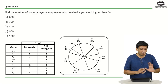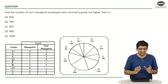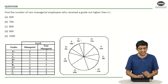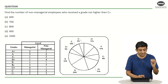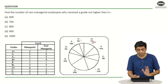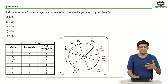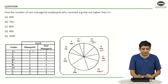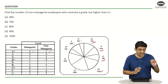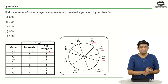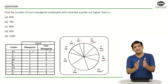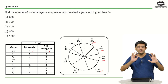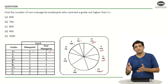In the first question, you have to find the number of non-managerial employees who received a grade not higher than C+. In this context, out of the 10,000 employees in this organization, A+ comprises 12% of the entire employee population, A is 10%, A minus is 8%, B+ is 15%, and so on. Of those who received A+, three parts are managerial and one part is non-managerial — meaning three out of every four people are managers and one out of four has a non-managerial job.